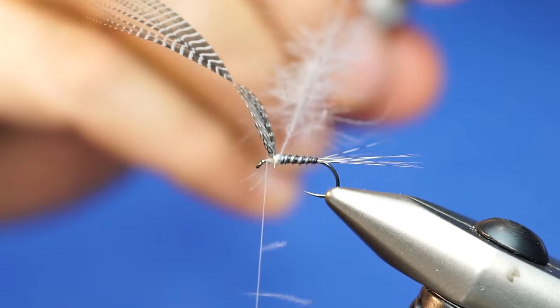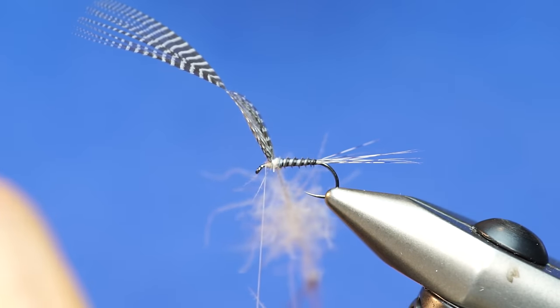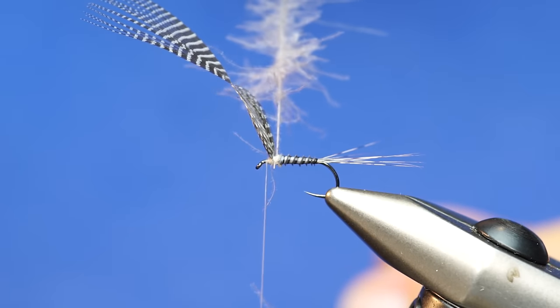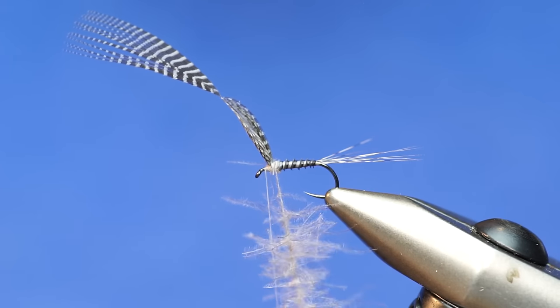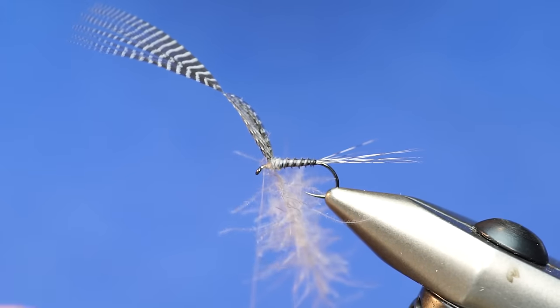Now it's got it, and I can give it a couple of twists. So now we've got our nice little dubbing loop basically of CDC. The other nice thing about these roto-dubbing twisters is that they'll turn perpendicular so that you can very easily wrap without the dubbing loop popping out.